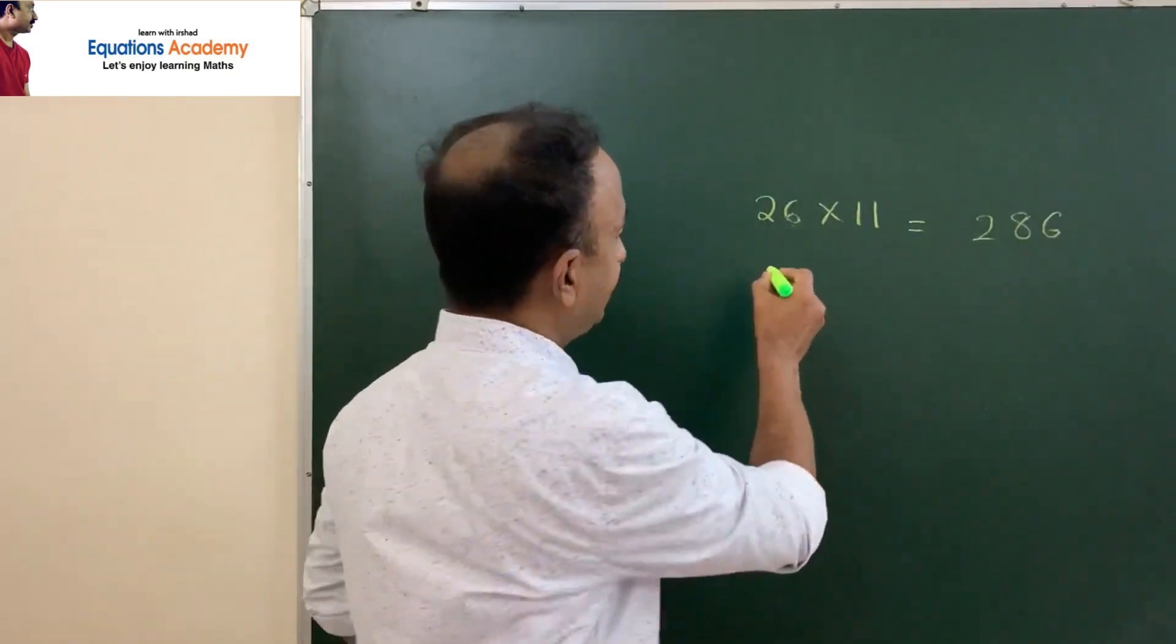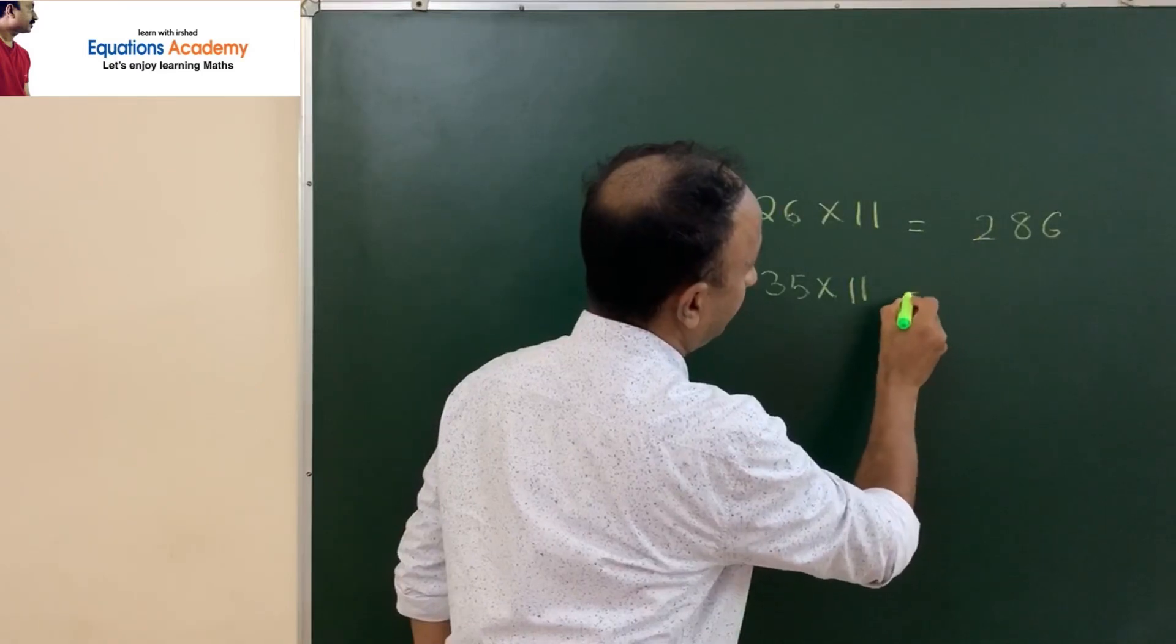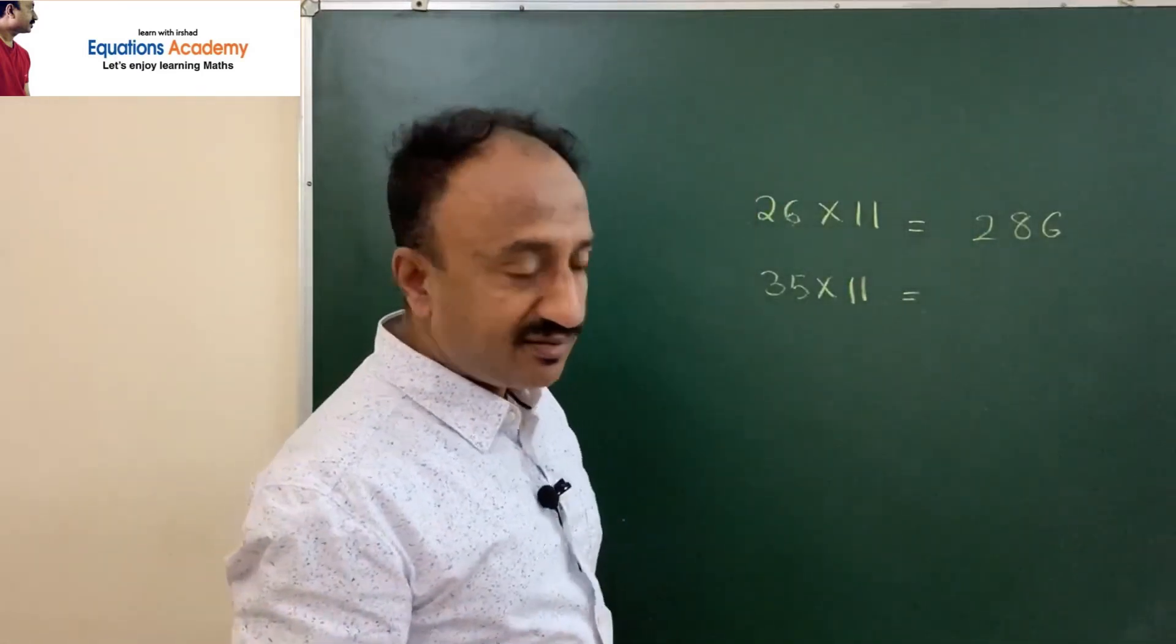Now what about 35 times 11? 35 times 11 is equal to...